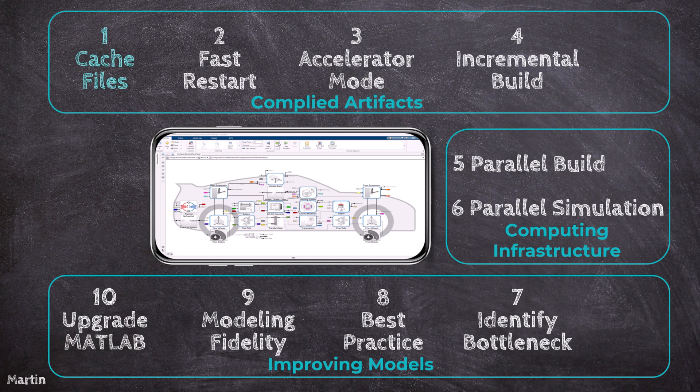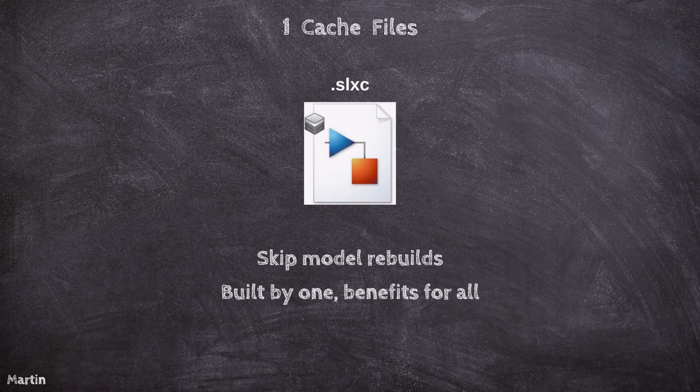Let's get started with Simulink cache files. Simulink cache files contain build artifacts that can speed up simulation and code generation. The cache files contain artifacts from the build that can reduce the time required for successive model simulation and code generation. These files have an SLXC file extension.